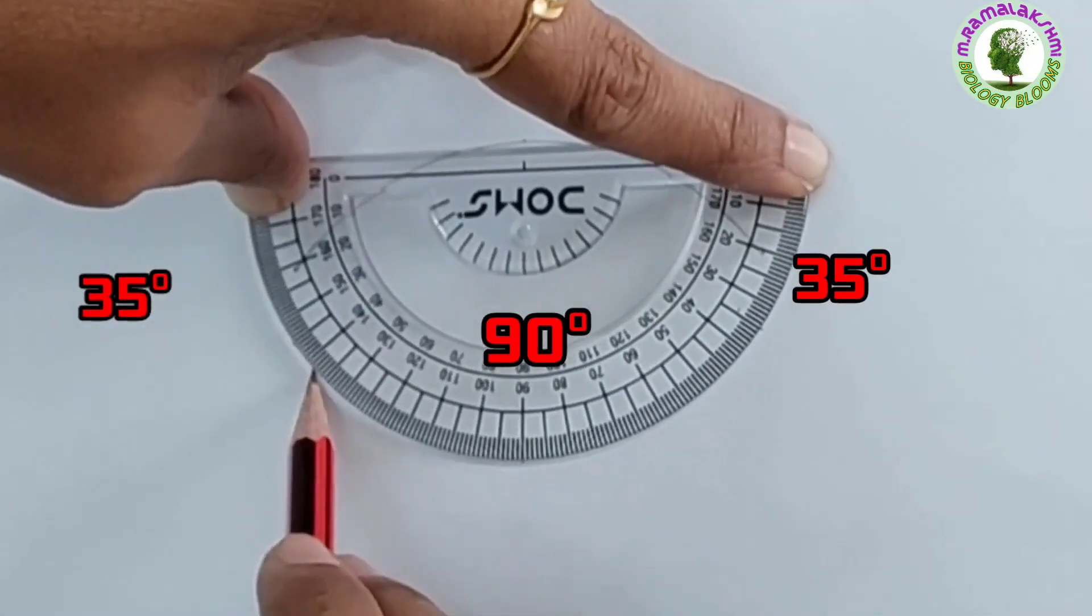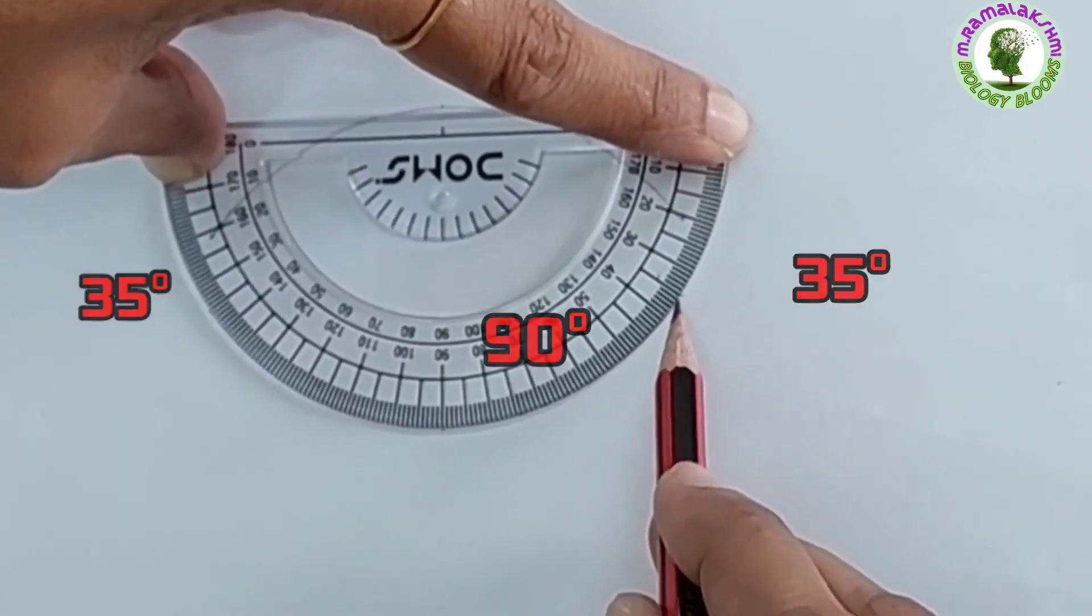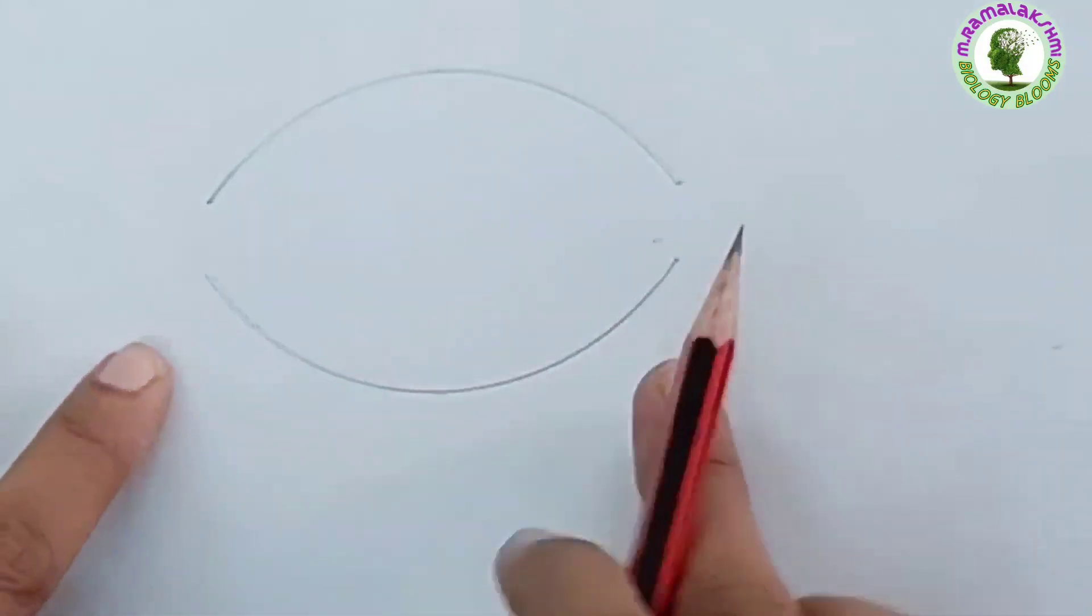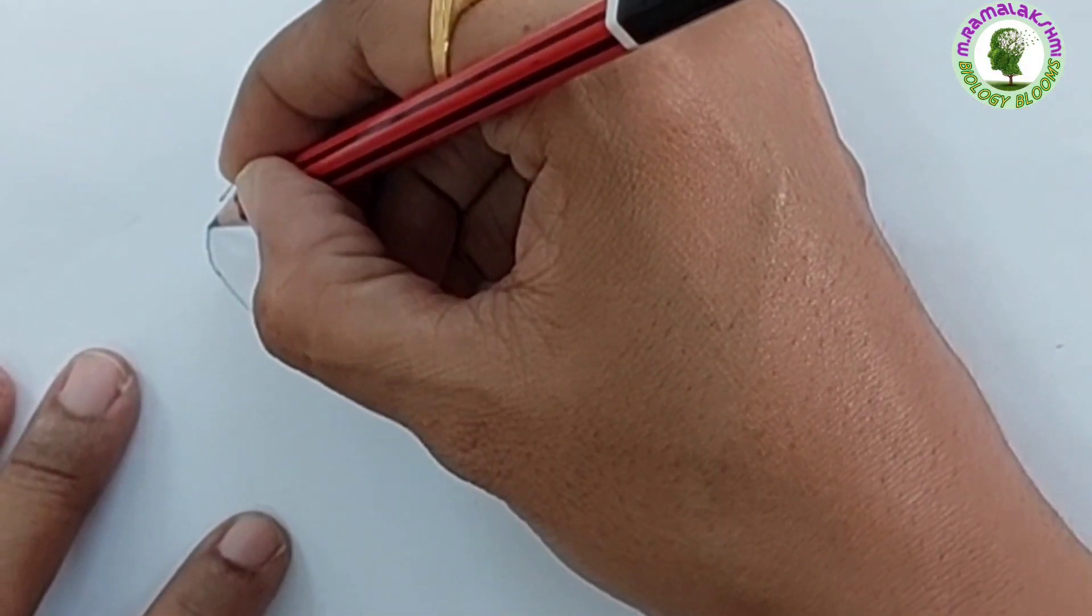Now, join the dots like this. Now, join the two curves at both sides like this.